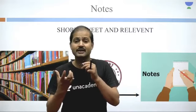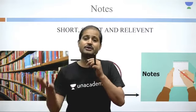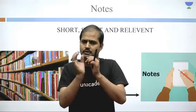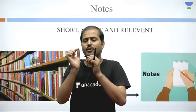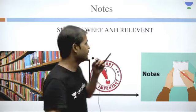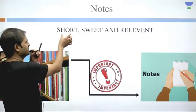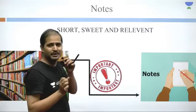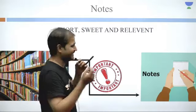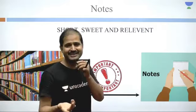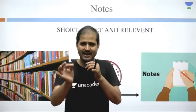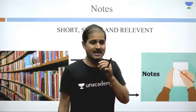दूसरा सवाल — notes की मात्रा किताबों की तुलना में कितनी होनी चाहिए? Of course, कम होनी चाहिए। Notes हमेशा कम और book की तुलना में बहुत limited होते हैं। तो notes के लिए सबसे best चीज़ यह है कि notes short होने चाहिए, sweet — यानी आसान और अच्छे लगने वाले — और relevant यानी काम के होने चाहिए। बेकाम के नहीं। तो notes: छोटे, अच्छे और काम के।